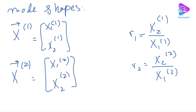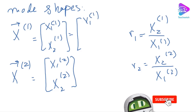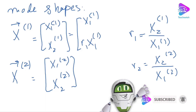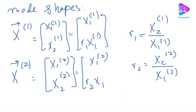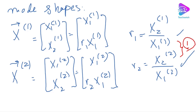Using these amplitude ratio definitions, we can simplify: instead of writing x21 and x22 separately, we express everything in terms of x11 and x12. So the first mode vector becomes [x11, r1*x11] and the second becomes [x12, r2*x12]. We can then plug these two expressions into the equations of motion to find r1 and r2.